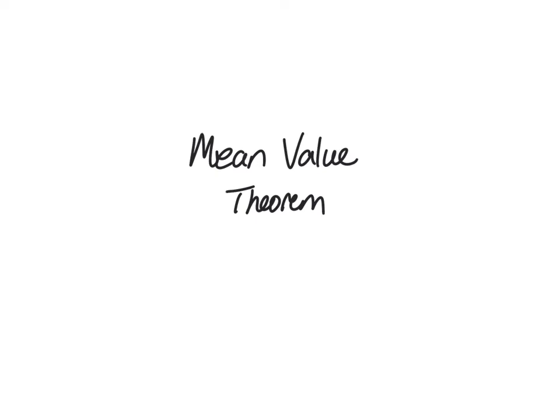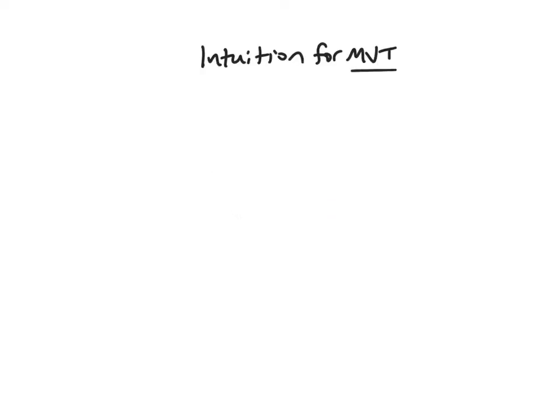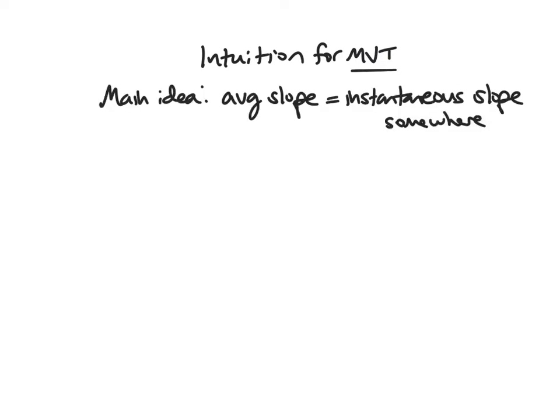Hello everyone. In this video we will be discussing our third value theorem of the semester, and that is the Mean Value Theorem. So first I want to talk about the basic idea and draw some pictures that give us intuition for the Mean Value Theorem, which we will usually call the MVT for short. The main idea is that the average slope over an interval is going to be equal to your instantaneous slope somewhere along that interval.